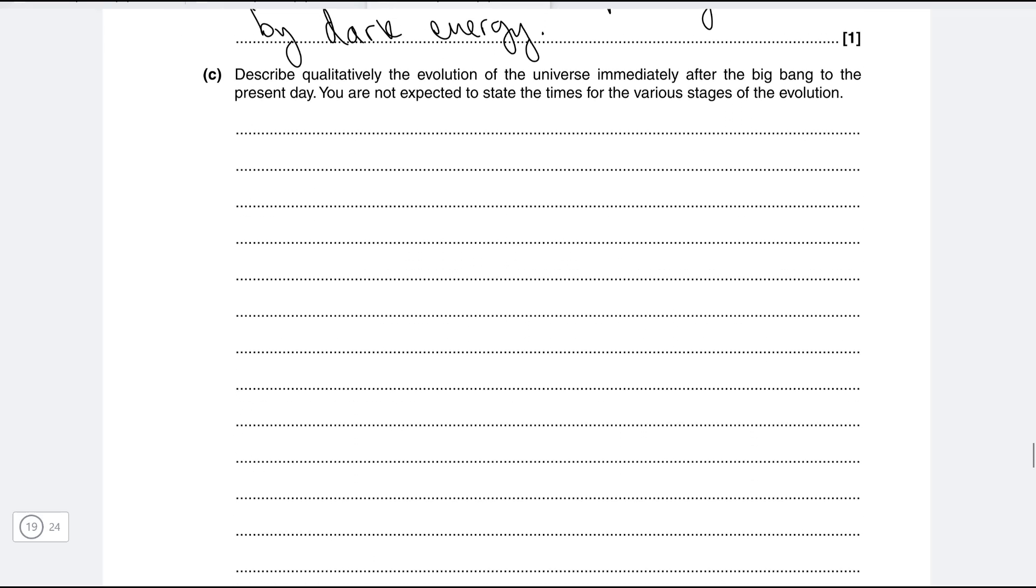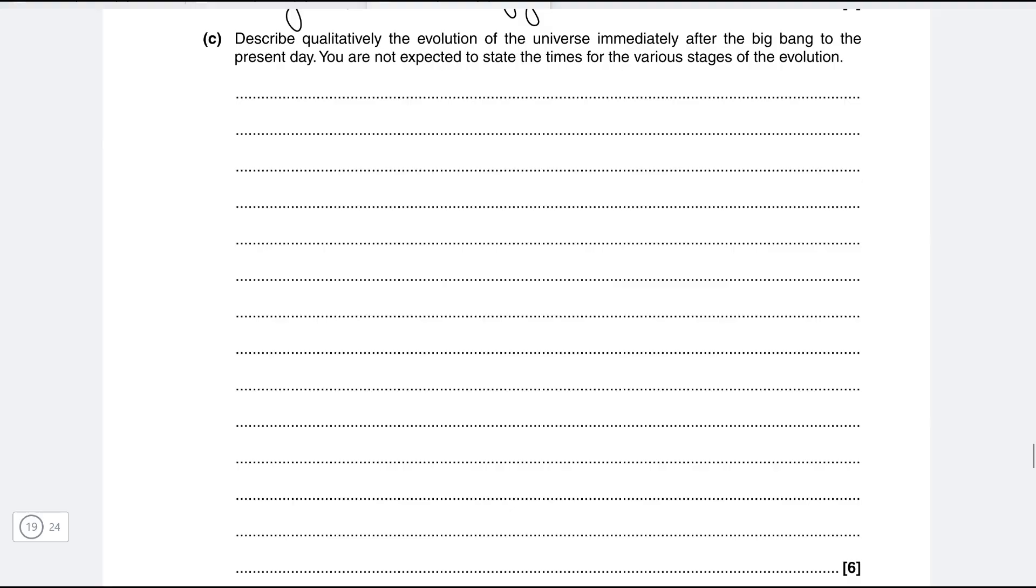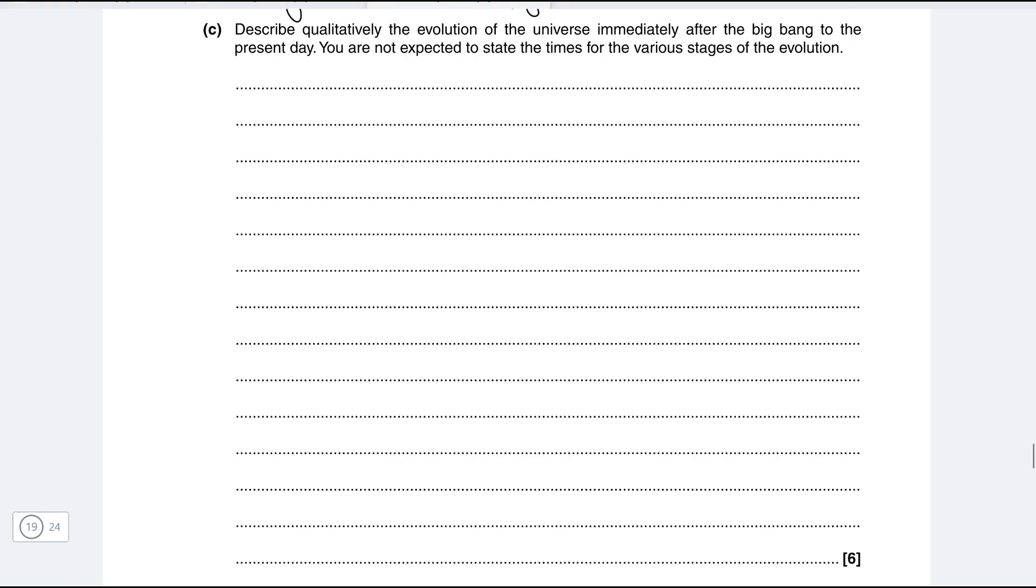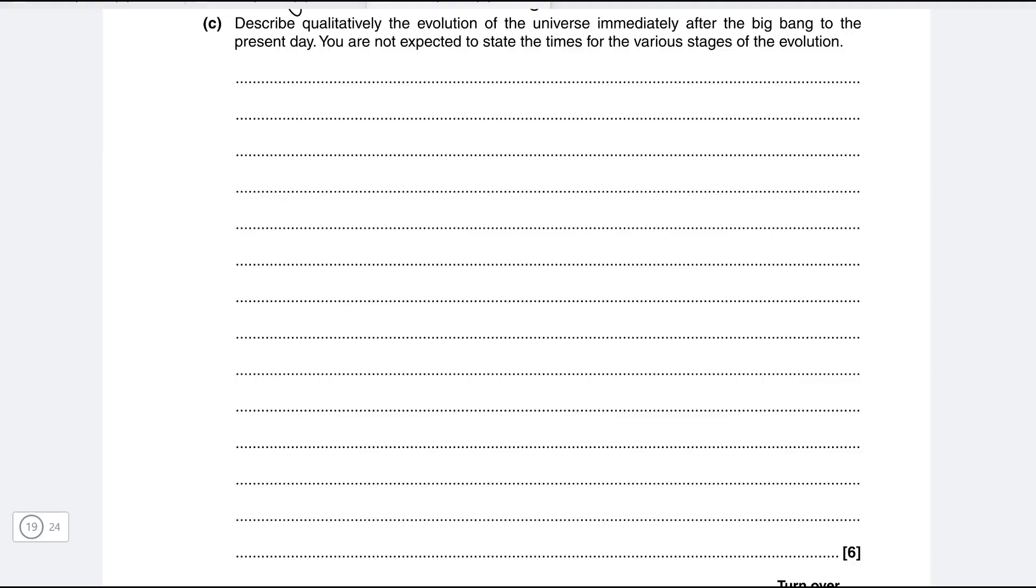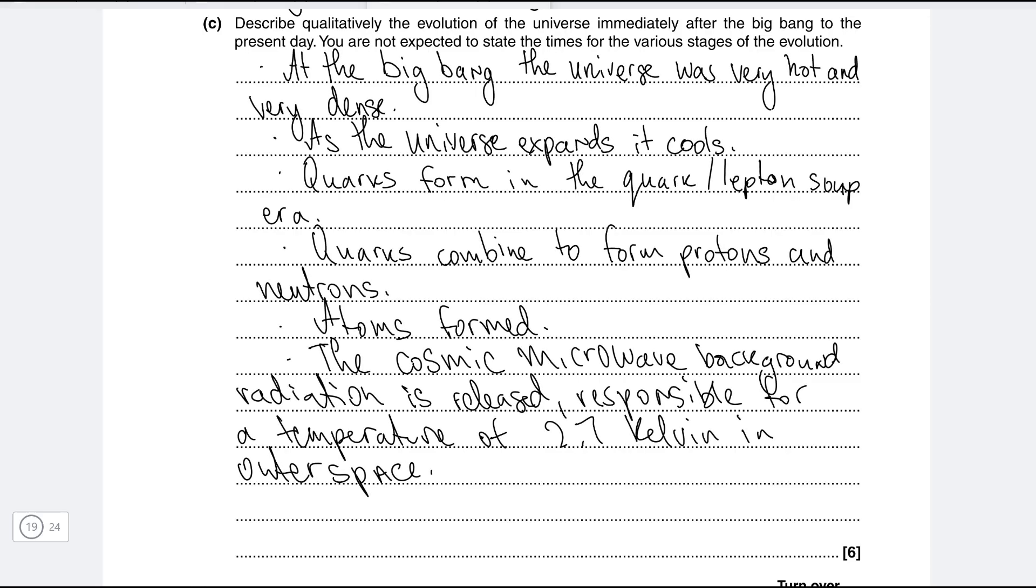Okay part c describe qualitatively the evolution of the universe immediately after the big bang to the present day. Well part c of this question is asking us to describe the entire history of the universe from the big bang to the present day. Okay well let's have a go. So here is a summary of the entire history of the universe immediately after the big bang to the present day. We're not expecting to state the times of various stages of the evolution.